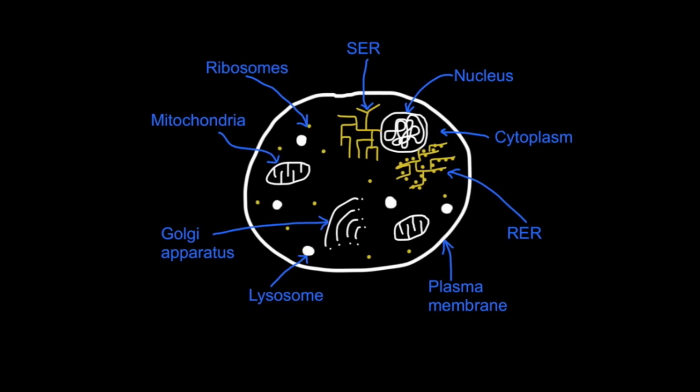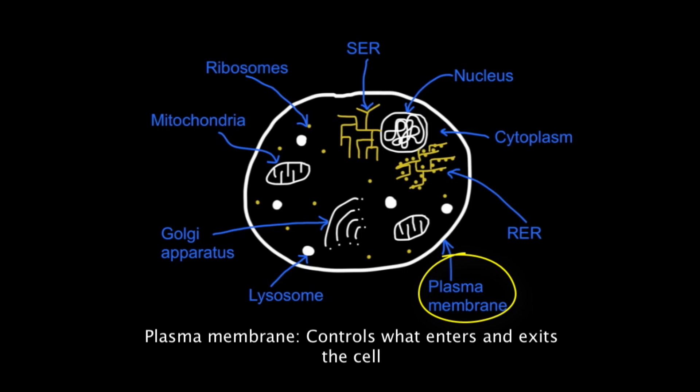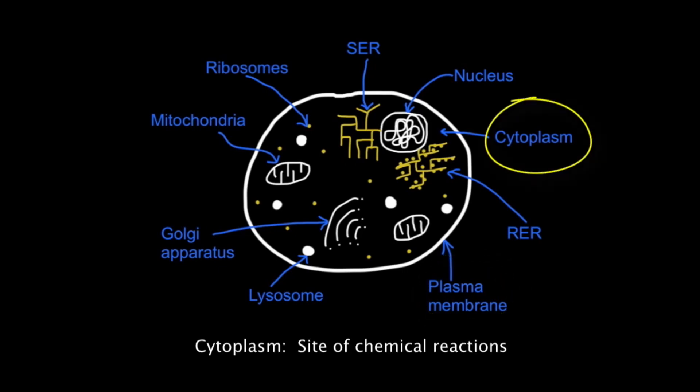Eukaryotic cells have a compartmentalized structure. They are surrounded by a plasma membrane which controls what enters and exits the cell, and contain cytoplasm, the fluid in which chemical reactions take place.